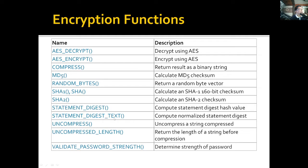STATEMENT_DIGEST and STATEMENT_DIGEST_TEXT are two related functions — one computes a statement digest hash value and the other computes a normalized statement digest. UNCOMPRESS and COMPRESS are related functions, and UNCOMPRESSED_LENGTH returns the length of the uncompressed string. VALIDATE_PASSWORD_STRENGTH determines the strength of a password, but you need to specify the password policy; without it, it will always return zero.